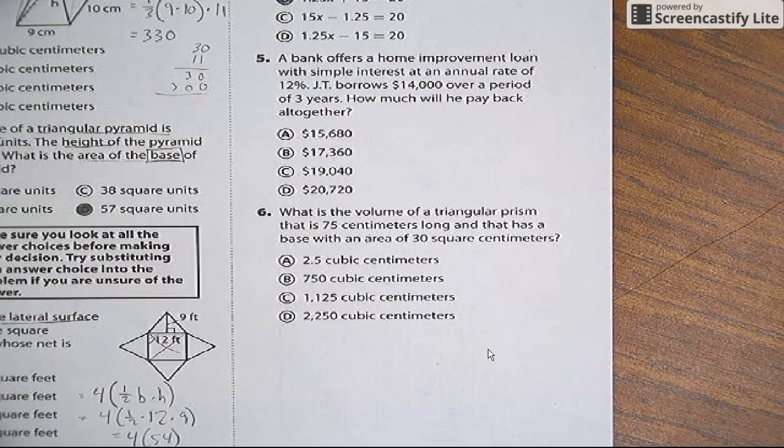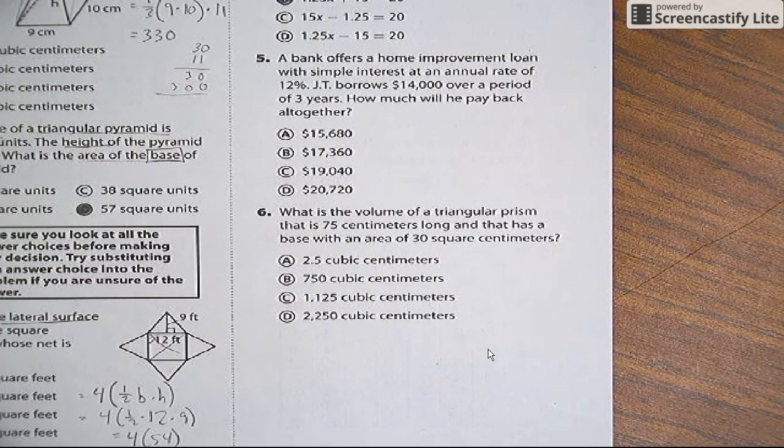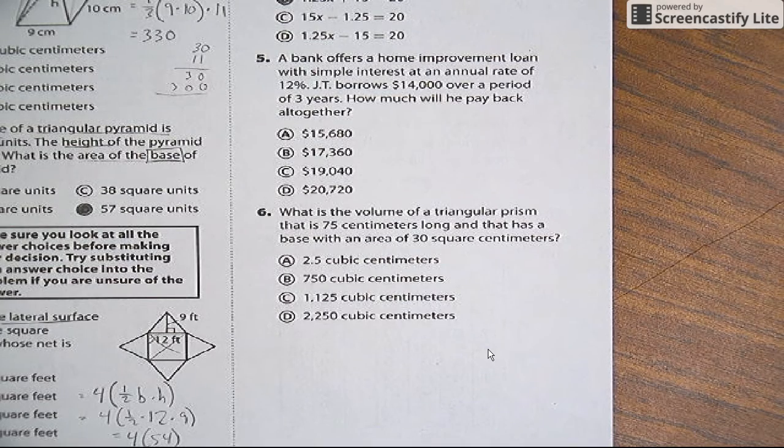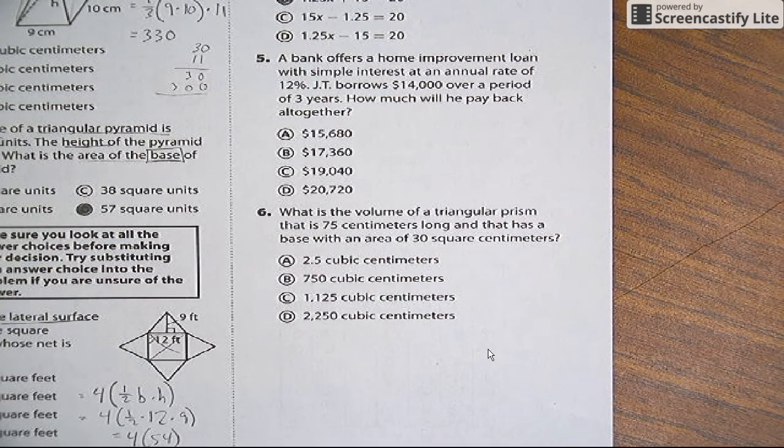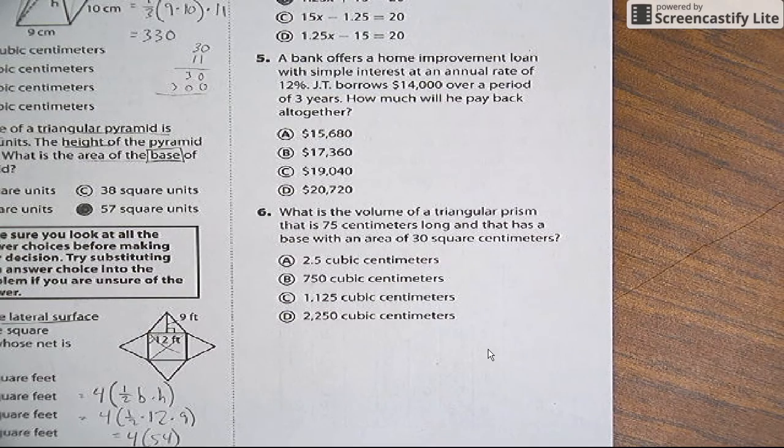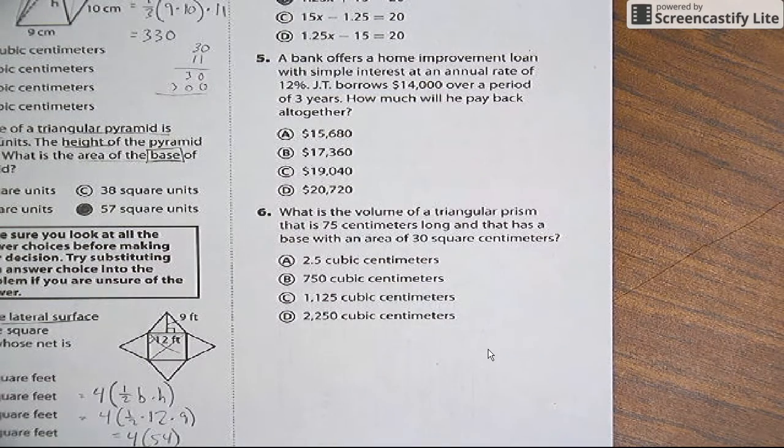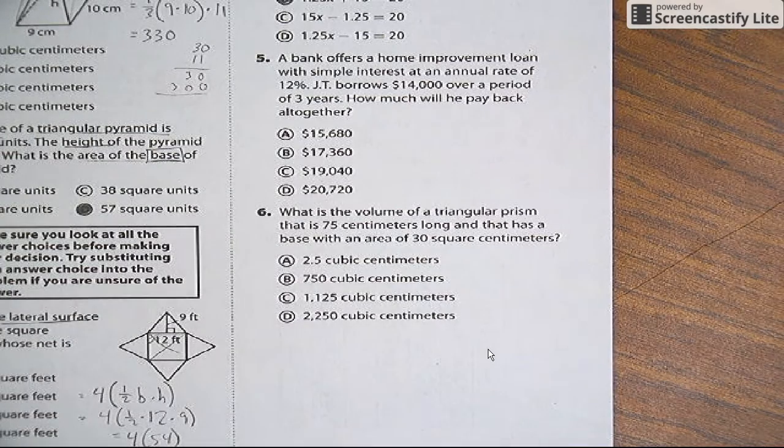Okay. Well, if you're borrowing with simple interest, all that means is that every year you have to pay back 12% of what you borrow. It doesn't compound. It's only off of what you borrowed.